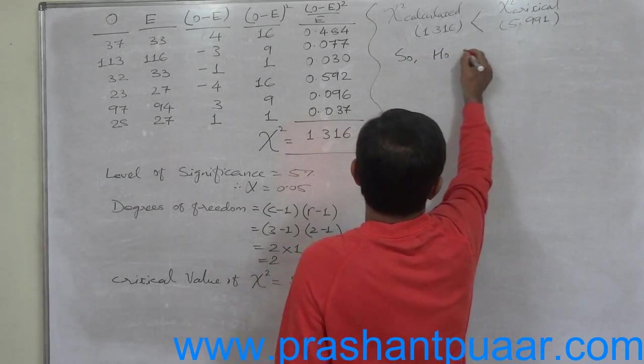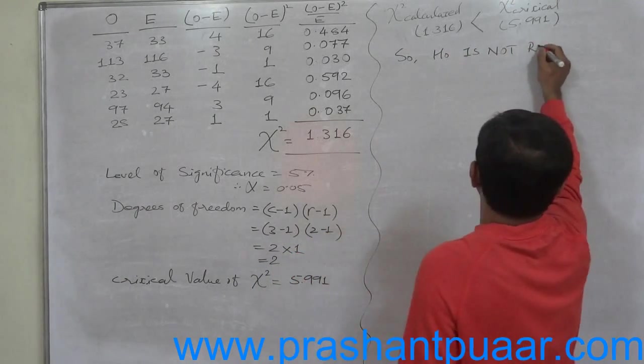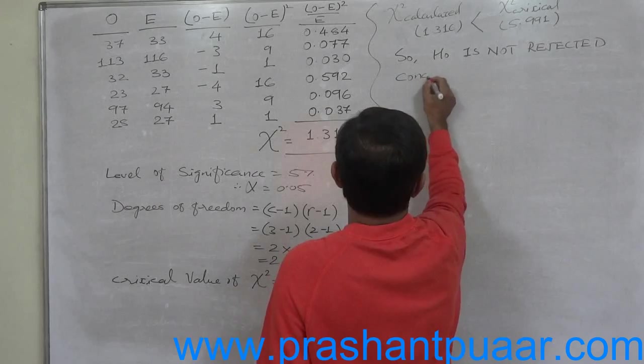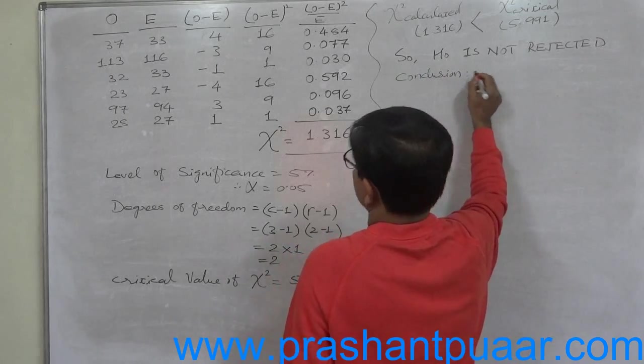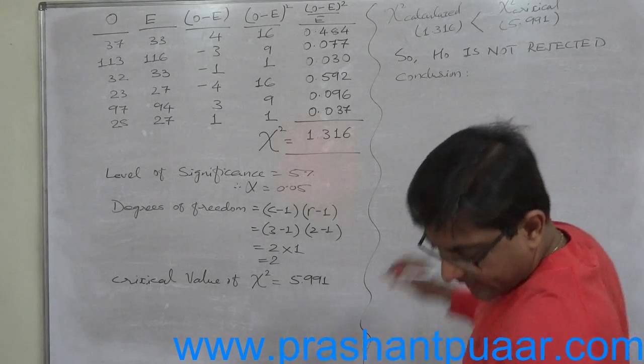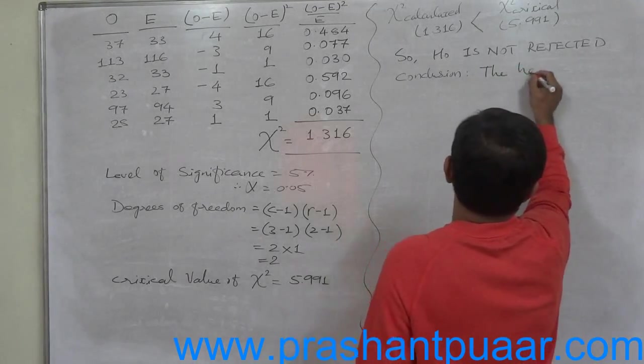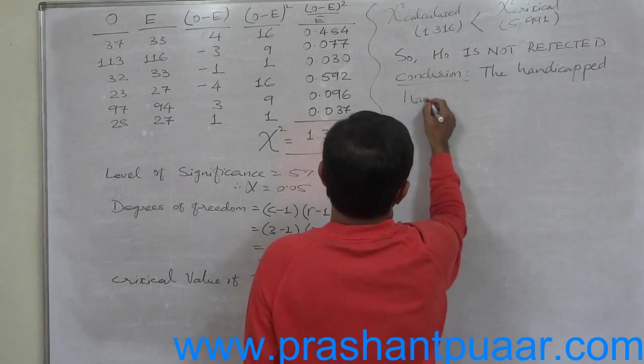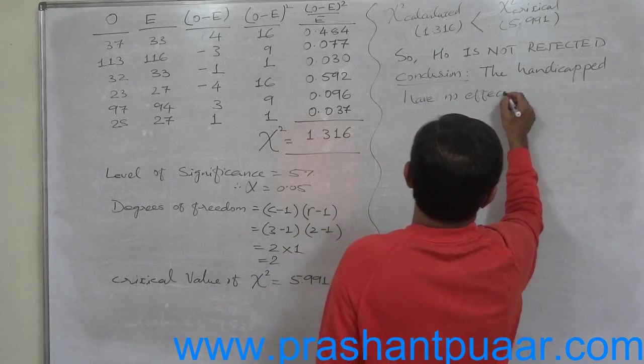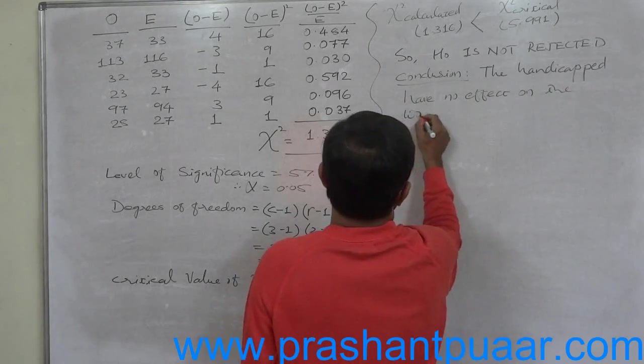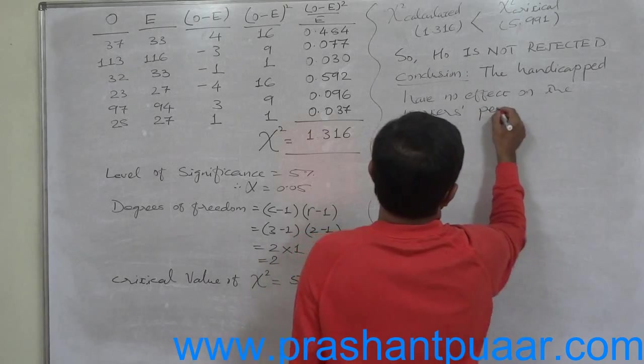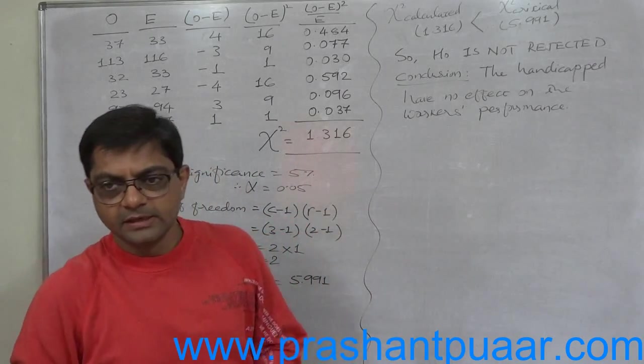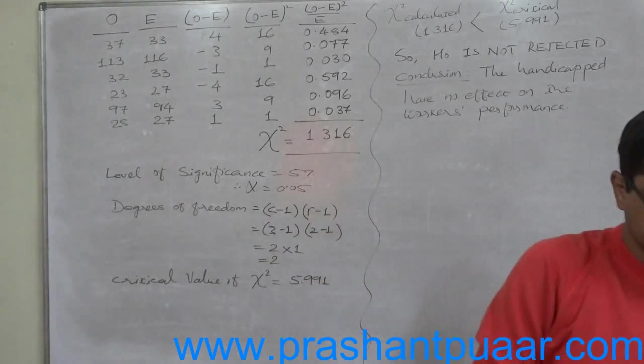So the calculated value of chi-square is less than the critical value, so the null hypothesis is not rejected, and the conclusion is: the handicap has no effect on workers' performance. This is chi-square test of independence.